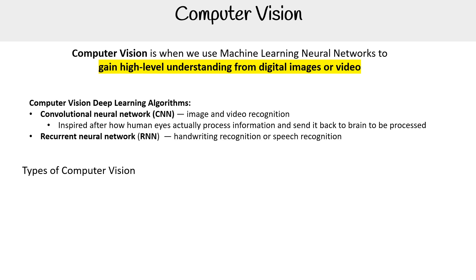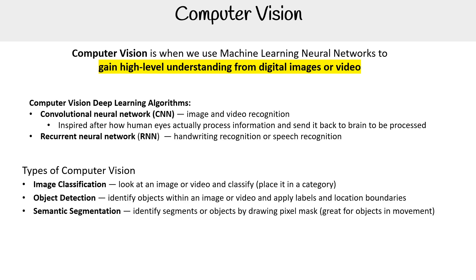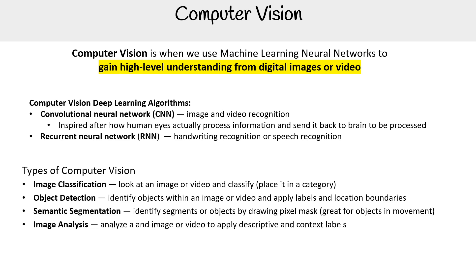For types of computer vision, we have image classification — looking at an image or video and classifying it into a category. Object detection identifies objects within an image or video and applies labels and location boundaries. Semantic segmentation identifies segments or objects by drawing pixel masks around them, which is great for objects in movement. And image analysis analyzes an image or video to apply descriptive context labels.